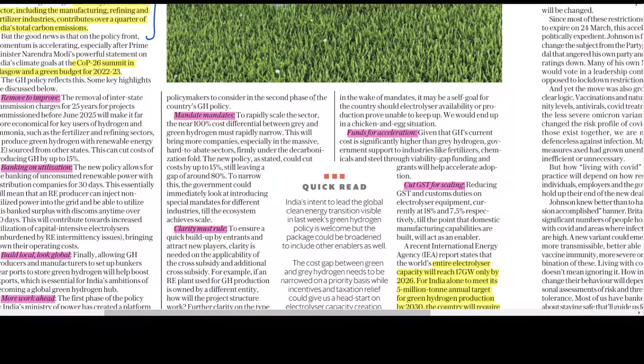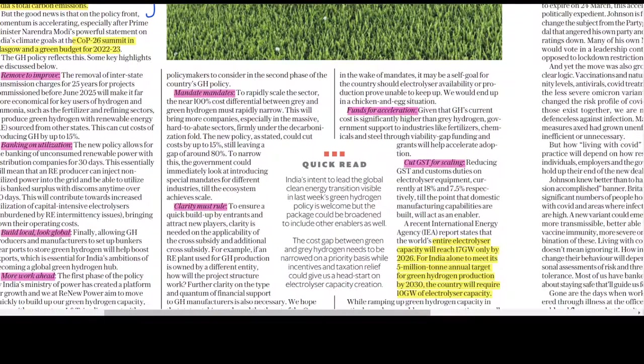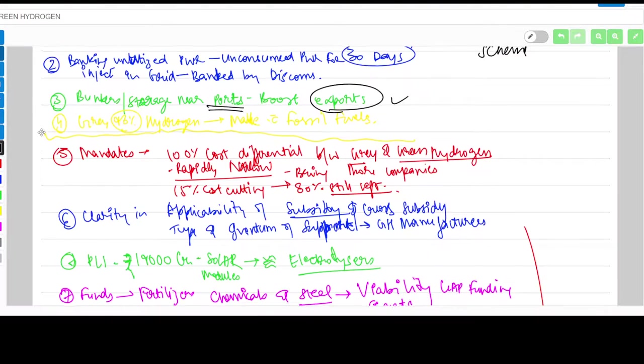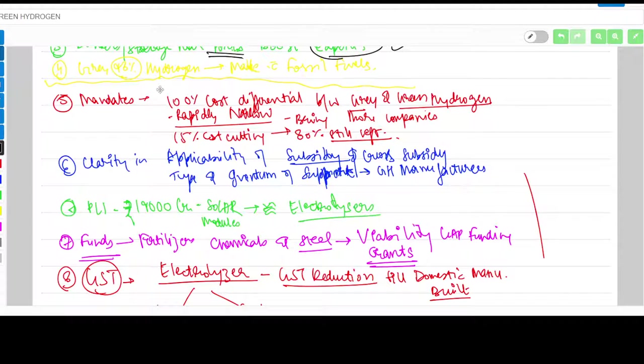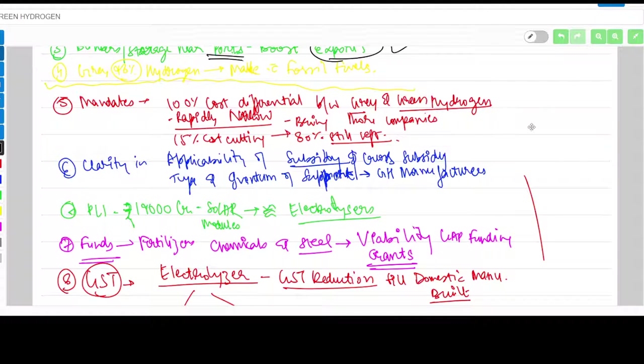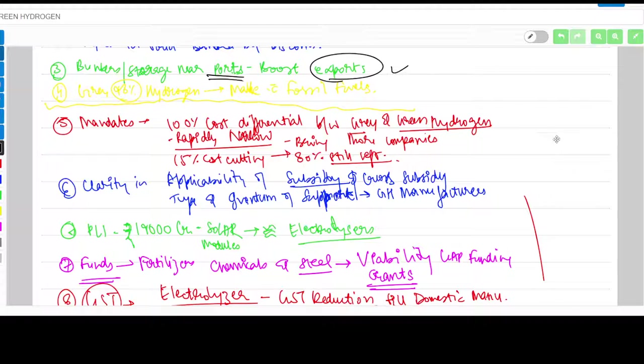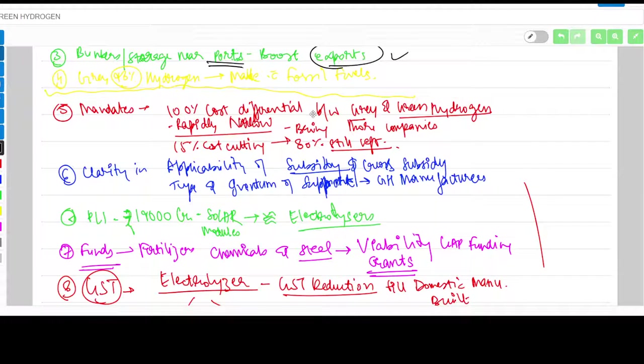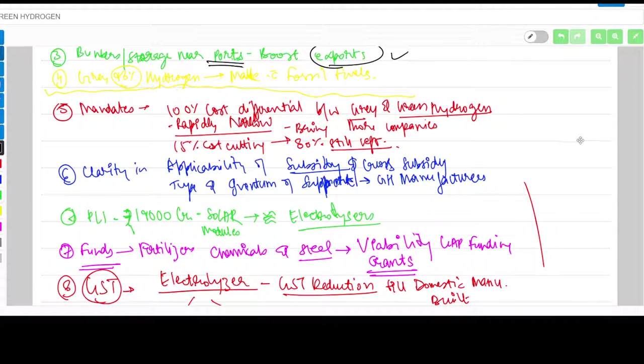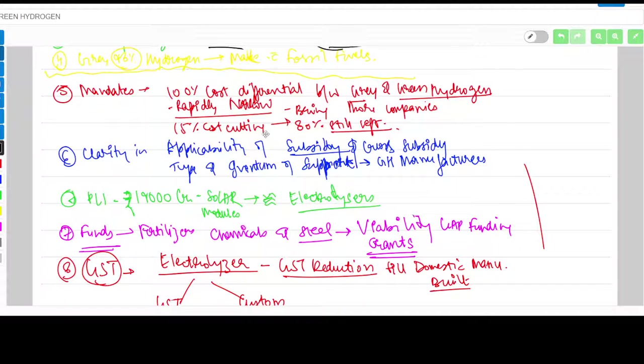Now the author gives us suggestions to consider in the second phase of green hydrogen policy. The first suggestion is mandate - there should be 100% cost differential between gray and green hydrogen brought to very narrow margins, so it could bring more companies into green hydrogen. Currently the policy allows 15% cost cutting, but companies still have to bear 80% of the costs.